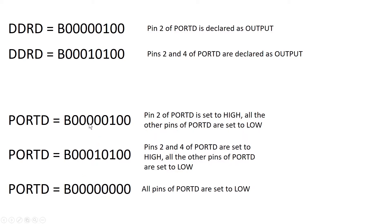One important thing to note: when we use the direct PORTD assignment command, it sets pin number two and pin number four as high but also sets all other pins as low simultaneously. Sometimes I may want to set pin two and pin four high without changing the state of, say, pin number six. This command will not do the job — it will change the state of pin six. To overcome this, we have to use the OR or AND commands, which I will explain in the next slide.